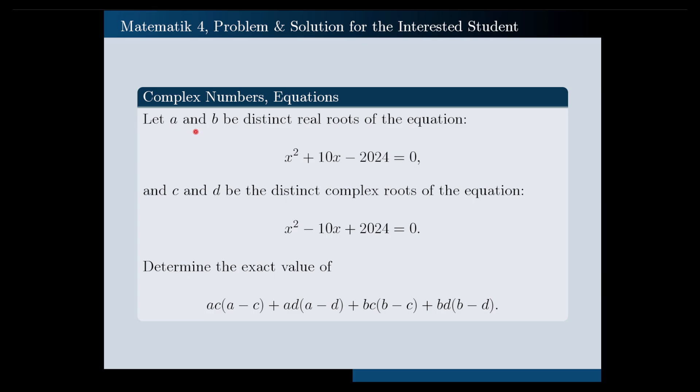Let a and b be distinct real roots of this equation, x squared plus 10x minus 2024 equals 0, and c and d be distinct complex roots of this equation, x squared minus 10x plus 2024 equals 0. Determine the exact value of the following expression: ac times a minus c plus ad times a minus d plus bc times b minus c plus bd times b minus d.